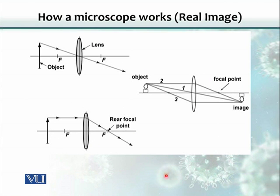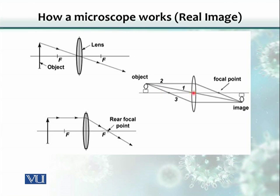The basic principle used for making a microscope involves a convex lens. If an object lies outside the focal point, you can trace where it would form an image. This is a ray diagram. You can draw a light ray parallel to the main axis, and when it strikes the lens, it bends and passes through the focal point.